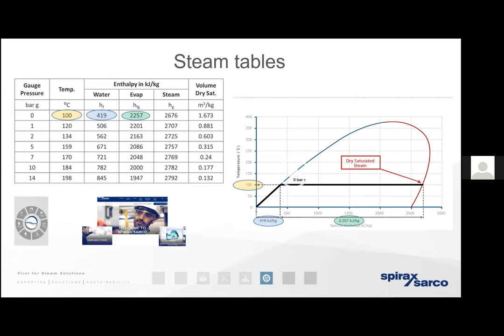Steam passing across that trapped mass of condensate will have more and more of its energy sucked out — it gets wetted out. The biggest problem with wet steam is that the mass reaching the process will have significantly less energy. The heat exchanger will either have to consume more and more steam to provide the required heating effect, or it will be effectively undersized, meaning the process time will extend and extend.